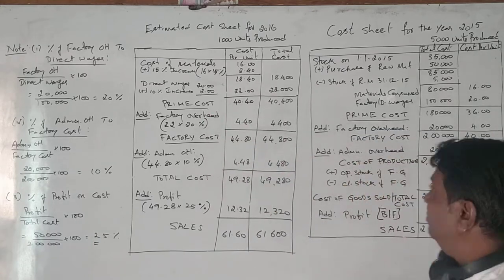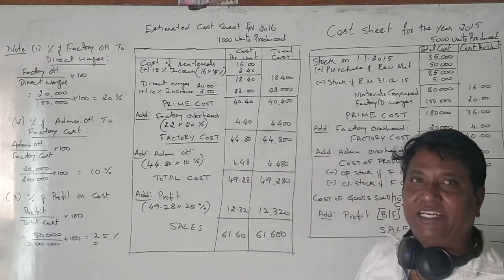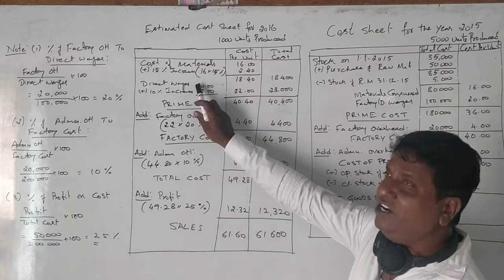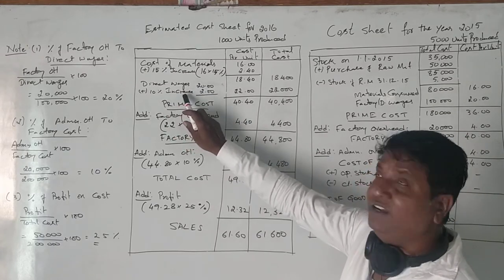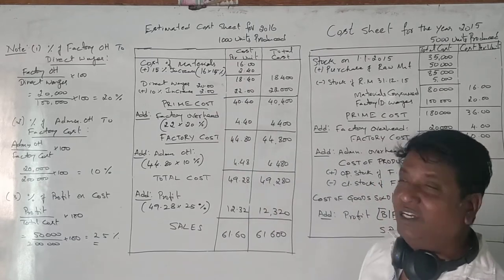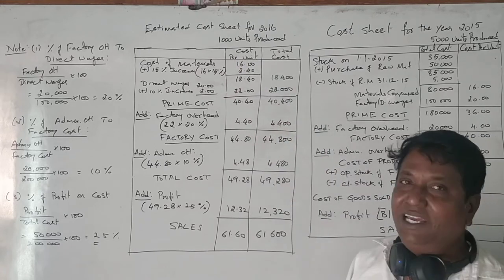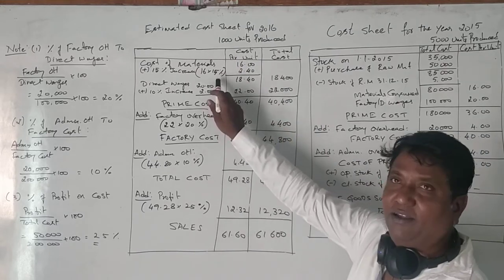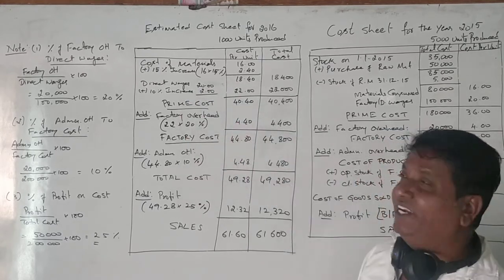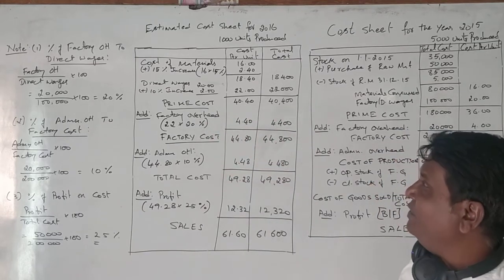Direct wages cost per unit was 20 rupees. As per the adjustment, wages increase by 10%, so 10% of 20 rupees is 2 rupees. The new per unit wages becomes 22 rupees. Multiplying 22 by 1,000 units gives a total wages cost of 22,000 rupees. Adding material and wages gives a prime cost of 40.40 rupees per unit, or 40,400 rupees total.